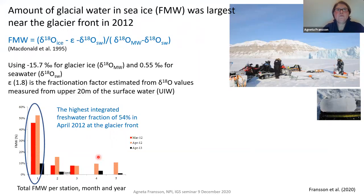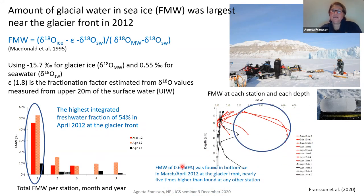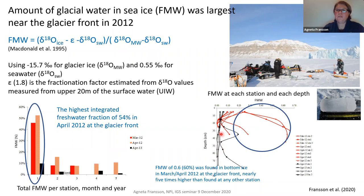We estimated the amount of glacier water in the sea ice near the glacier front in 2012, using a formulation for freshwater fraction with end members of δ¹⁸O in ice, seawater, and glacier meltwater. The highest integrated freshwater fraction — 54% in April — was found at the glacier front (station 1, innermost part), decreasing outward. The red line is 2012 and black is 2013, which had much less meltwater. At each station and depth it also showed that 60% freshwater fraction was found in bottom ice in March–April 2012 at the glacier front, nearly five times higher than any other station, and also much higher than in 2013.